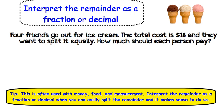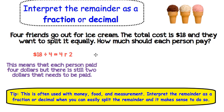The next choice is to interpret the remainder as a fraction or a decimal. Here is an example. Four friends go out for ice cream. The total cost is $18 and they want to split it equally. How much should each person pay? First we would take that $18 and divide it by 4 people and we would get an answer of 4 remainder 2.